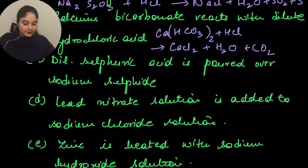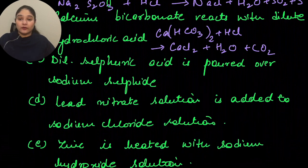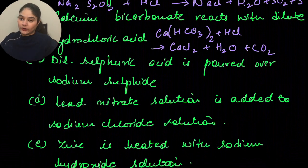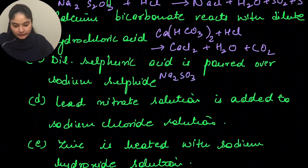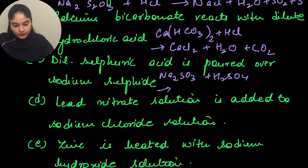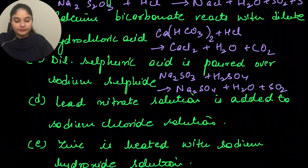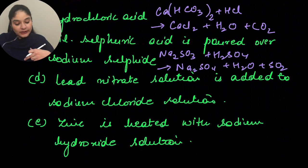Part C: dilute sulfuric acid is poured over sodium sulfite. When you have sulfite, let me clarify — this is Na₂SO₃, not sulfide. So Na₂SO₃ + H₂SO₄ gives Na₂SO₄ + H₂O + SO₂.